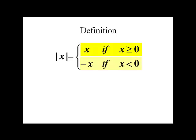It's x if x is greater than or equal to zero, and negative x if x is less than zero. So basically we're graphing a piecewise-defined function.